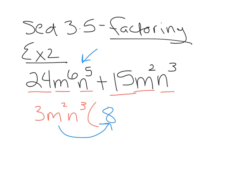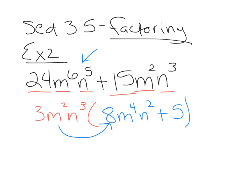24 divided by 3 is 8. When you divide the variables, you subtract the exponents, so you'll have m⁴n². Then for the second term, 15 divided by 3 is 5. The m's cancel because they're the same, and the n's also cancel. So when you factor out the GCF, you should be able to distribute to get back your original expression.